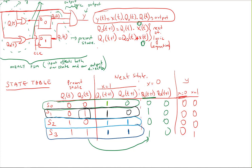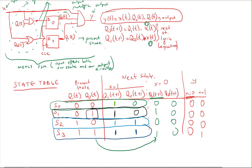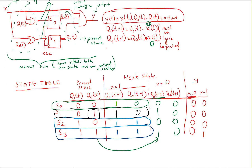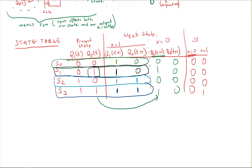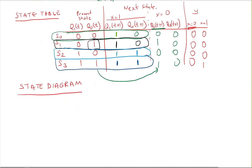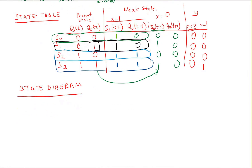Finite state machines can be represented in multiple ways: as a schematic, using equations for output logic and next state logic, or using a state table. There is one more way to describe a finite state machine called a state diagram, which is a pictorial way of describing the state table.